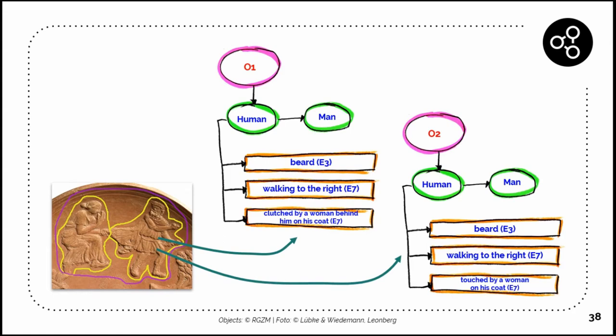On these appliqués, as I said, we have some kind of observations. For example, here you can see a human of a type man, and he has a beard and he is walking to the right. In the last orange field you can see there are two different opinions: what is he doing? Maybe he's clutched by a woman behind him on his coat, or is touched by a woman on his coat. Two different things, maybe two different interpretations in the end.